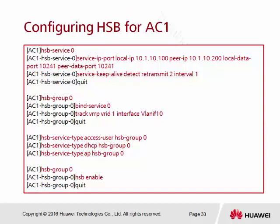After enabling the HSP service, go to the HSP group. Inside the group, bind the service we just created — the HSP service belongs to ID 0, so we put zero for the bind service. Don't forget to bind the VRP group into this HSP group using the command 'track vrp vrid 1 interface vlan 10'. Now the VRP and HSP service are both bound into the same HSP group.